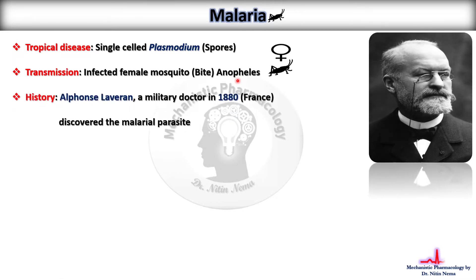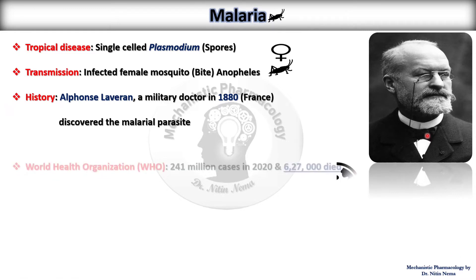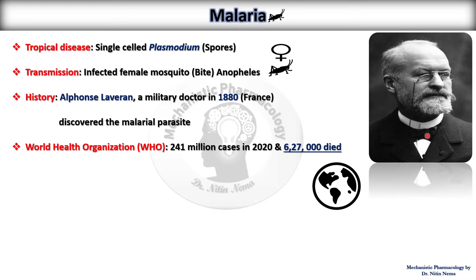Coming towards its history, the scientist named Alphonse Laveran, a military doctor, in the year 1880 discovered this malarial parasite. According to the World Health Organization, in the year 2020, 241 million cases of malaria were observed, and approximately 627,000 patients died with malaria in 2020. Therefore, this is one of the most threatening disorders and needs treatment as early as possible.